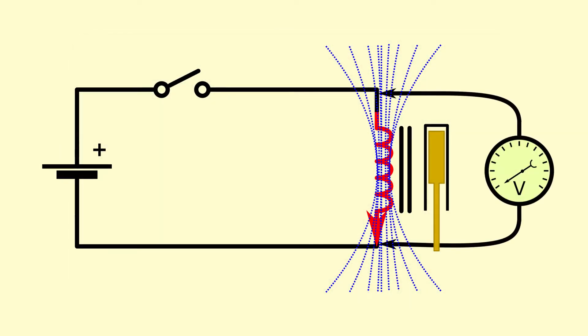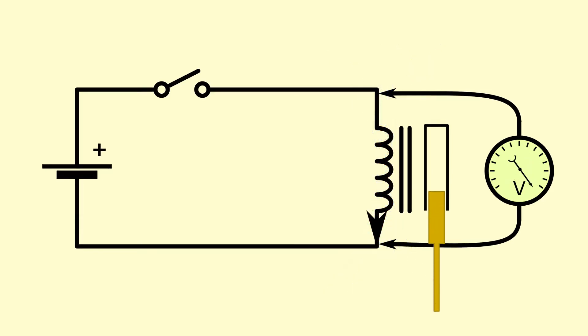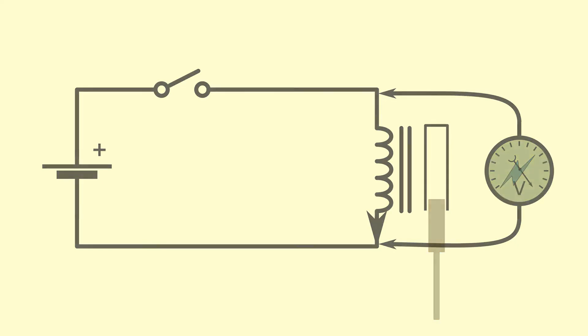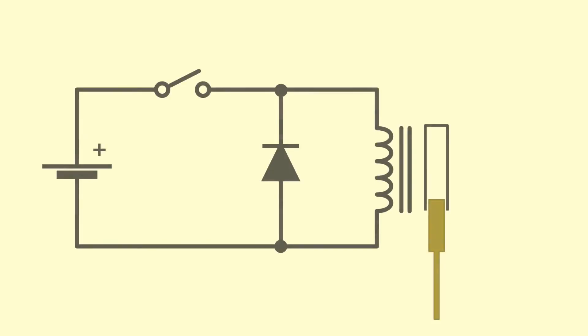If we measure the voltage across the coil, we see that as the field collapses it shoots up. It could easily reach hundreds of volts until either something breaks, you get arcing across the switch or eventually the power dissipates in the wiring. So what can we do to prevent this? This is where the diode comes in.